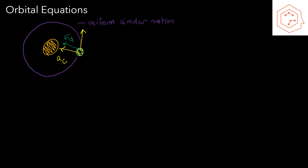We can write an equation for the centripetal force, where Fc equals the orbiting mass multiplied by the centripetal acceleration, which equals the orbiting mass times its velocity squared divided by the radius of the orbit — the distance from the orbit to the center of the inner mass. Since the centripetal force equals the gravitational force, we can set Fc equal to mv²/r.